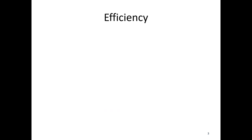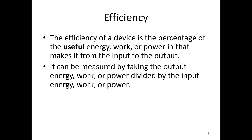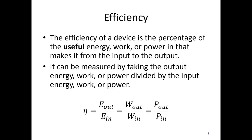Now, with efficiency: the efficiency of a device is the percentage of useful energy, work, or power that makes it from the input of a system to the output. It can be measured by taking the output energy, work, or power and dividing by the corresponding input. So the equations are: energy out over energy in, work out over work in, or power out over power in — any one of those three gives the efficiency, represented by the Greek letter eta.